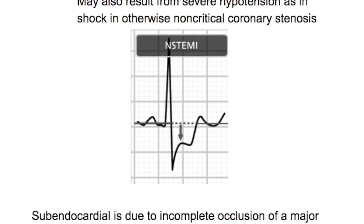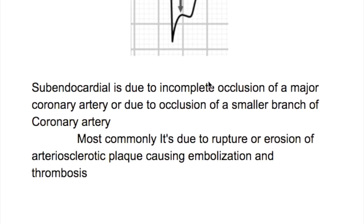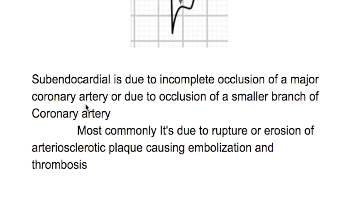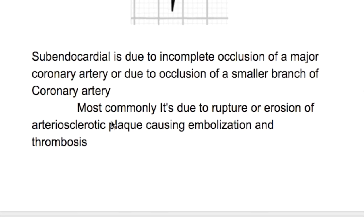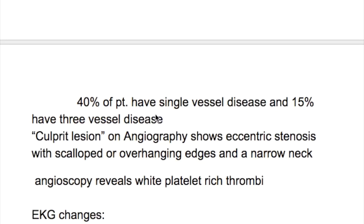Subendocardial infarction shows ST depression and involves the partial thickness of the cardiac wall — half or one third of the wall thickness. It is caused by incomplete occlusion of a major coronary artery or occlusion of a smaller branch. Most commonly it is due to rupture or erosion of an atherosclerotic plaque causing embolization and thrombosis.